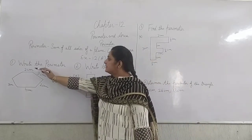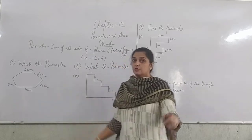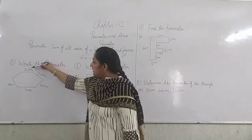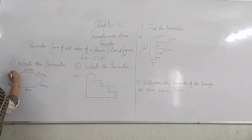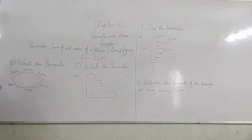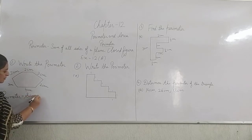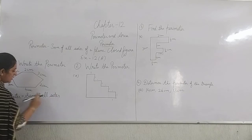So in this way, the first question is: write the perimeter of this closed figure. So how do we find the perimeter of this closed figure? First we will write the formula: Perimeter equals sum of all sides.